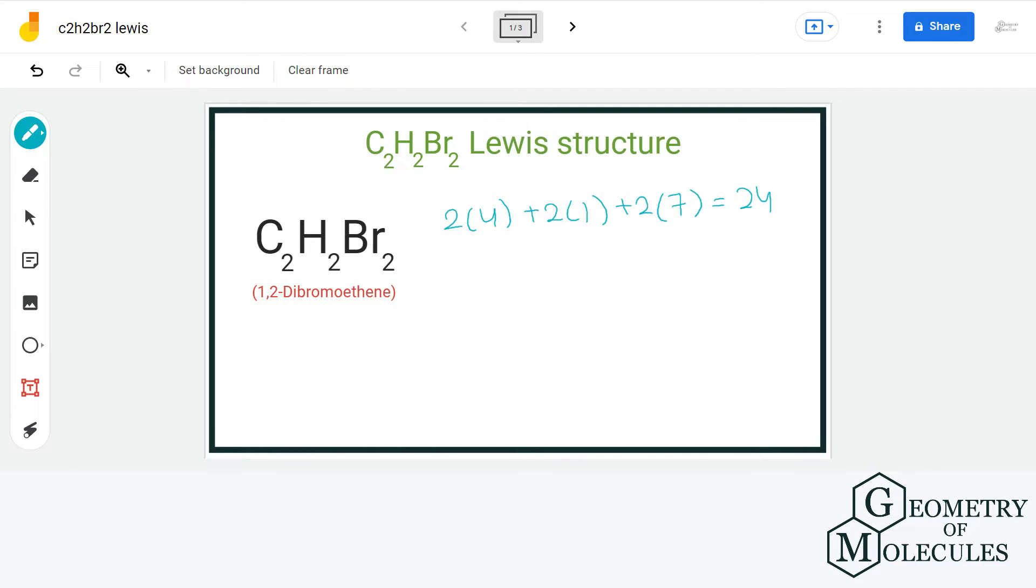For the arrangement of atoms, we will put 2 carbon atoms adjacent to each other and attach bromine to each carbon. We have 2 hydrogen atoms that will form bond with each carbon atom.